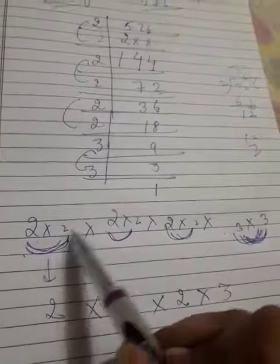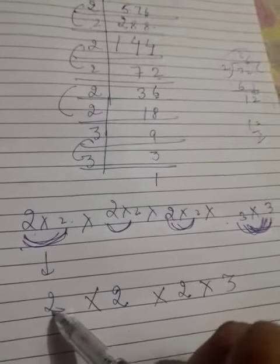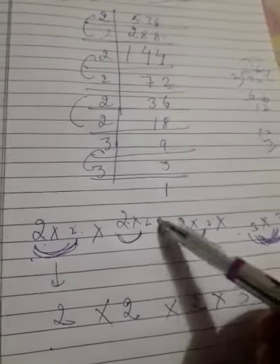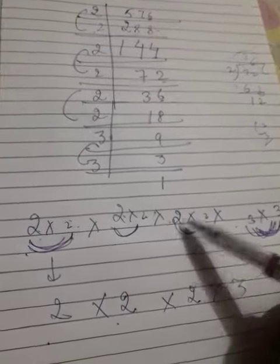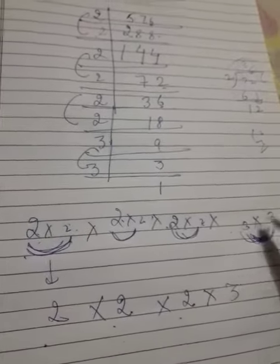Simply we can say from 2 same numbers we can take out 1 number if we have to find a perfect square. From these 2 we take out 1, from these 2 we take 1, from these 2 numbers we take 1.